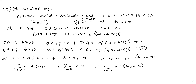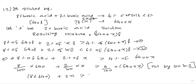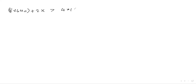Multiplying both sides by 100, the denominators cancel out. So we get: 8 into 640 plus 2x is greater than 4 into 640 plus x. Expanding the left side: 8 into 640 plus 2x.